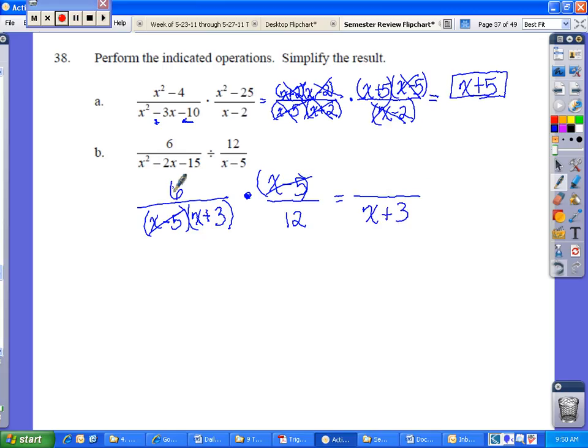And now the 6 and 12 can also be reduced. So 6 goes into 6 one time, and 6 goes into 12 two times. And therefore, I'm also left with a 2 on the bottom. Nothing's left on top except for a 1. So therefore, I'm just left with 1 over 2 times x plus 3 for my answer.